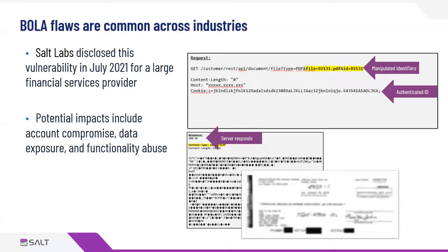Privilege escalation is one potential outcome, but there are many. BOLA is actually another way to achieve account takeover — not just credential stuffing or brute forcing. You can exploit BOLA to take over accounts, maybe by manipulating two-factor authentication requests and redirecting where the request goes to an attacker-controlled device. Data exposure is very common, and this is often used to scrape data in large volumes. Then there's functionality abuse, which can tie into broken function level authorization, or BFLA — though it's different. You have to think about whether you're changing object identifiers or function identifiers. In this case, it is very clearly an object identifier being manipulated.